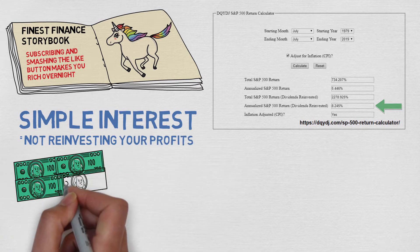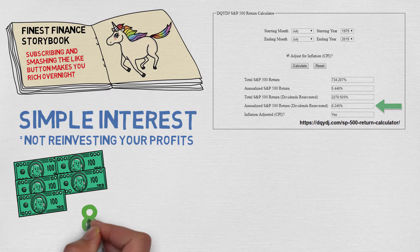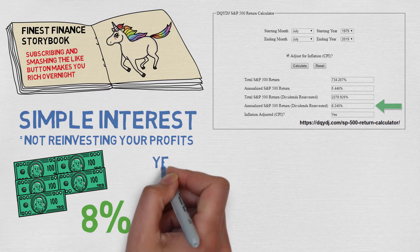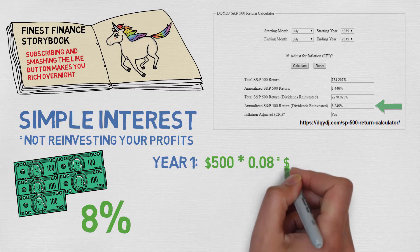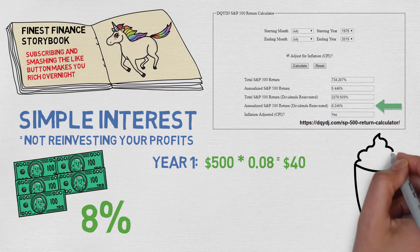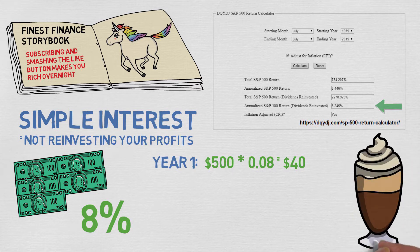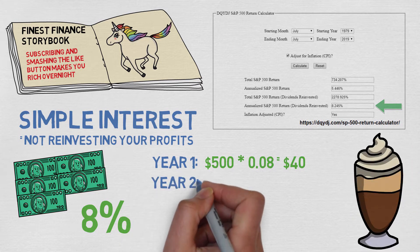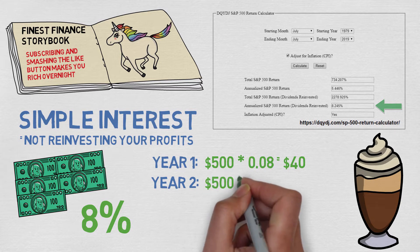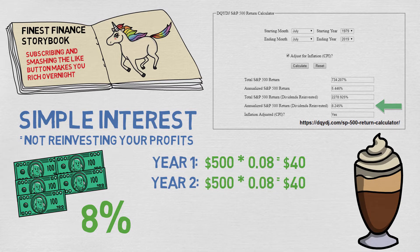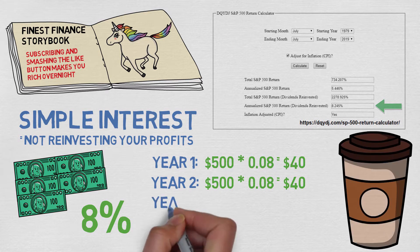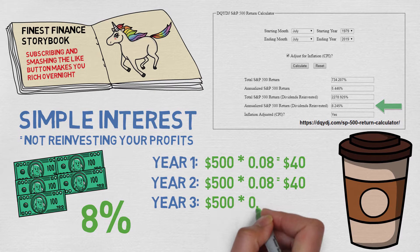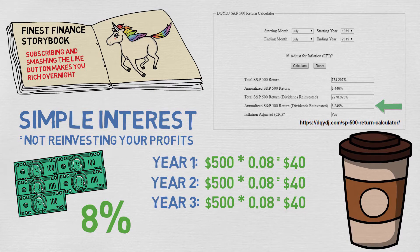Let's use a 500 dollar investment and 8% annual interest rate. The first year your return on investment will be 500 dollars times 0.08 equals 40 dollars. Now you don't reinvest your profits — you would rather buy 8 Starbucks coffees. So the second year your return on investment will be the same: 500 dollars times 0.08 equals 40 dollars. You spend it again, and the third year profits will be the same: 500 dollars times 0.08 equals 40 dollars. When you are not reinvesting your profits, your profits will stay the same forever.